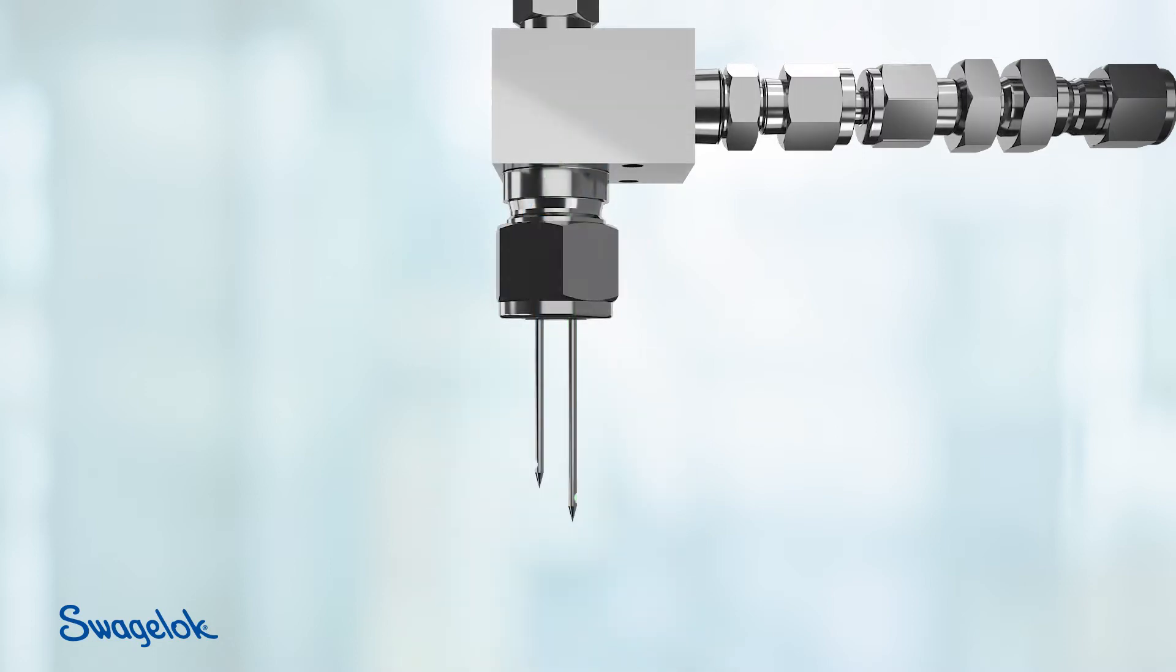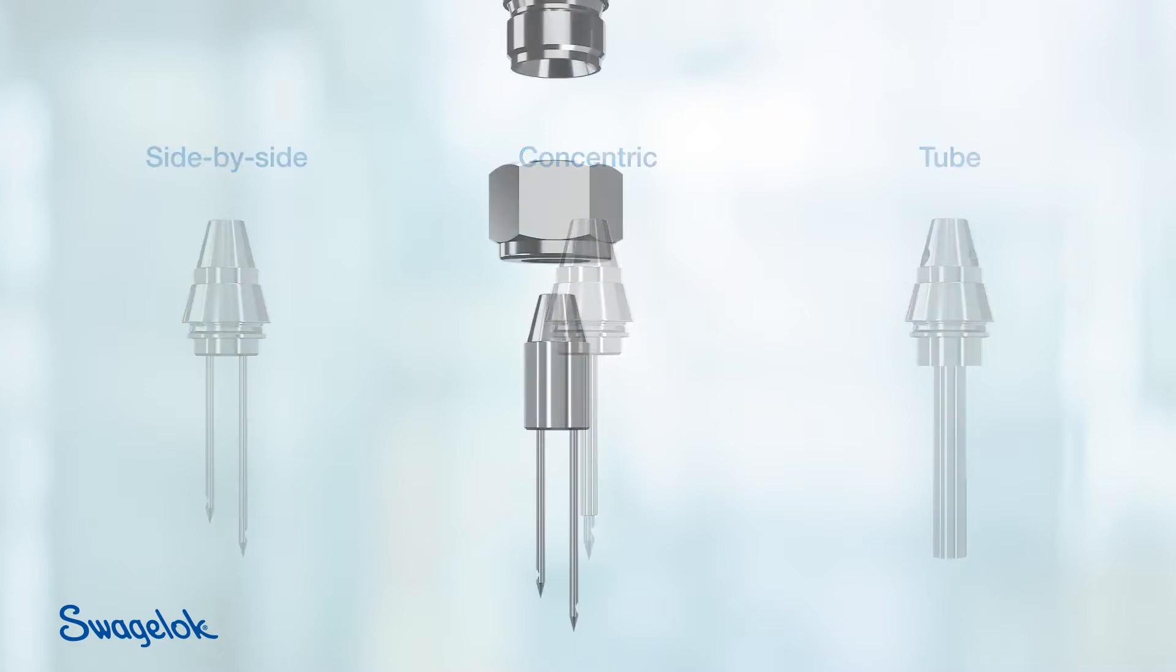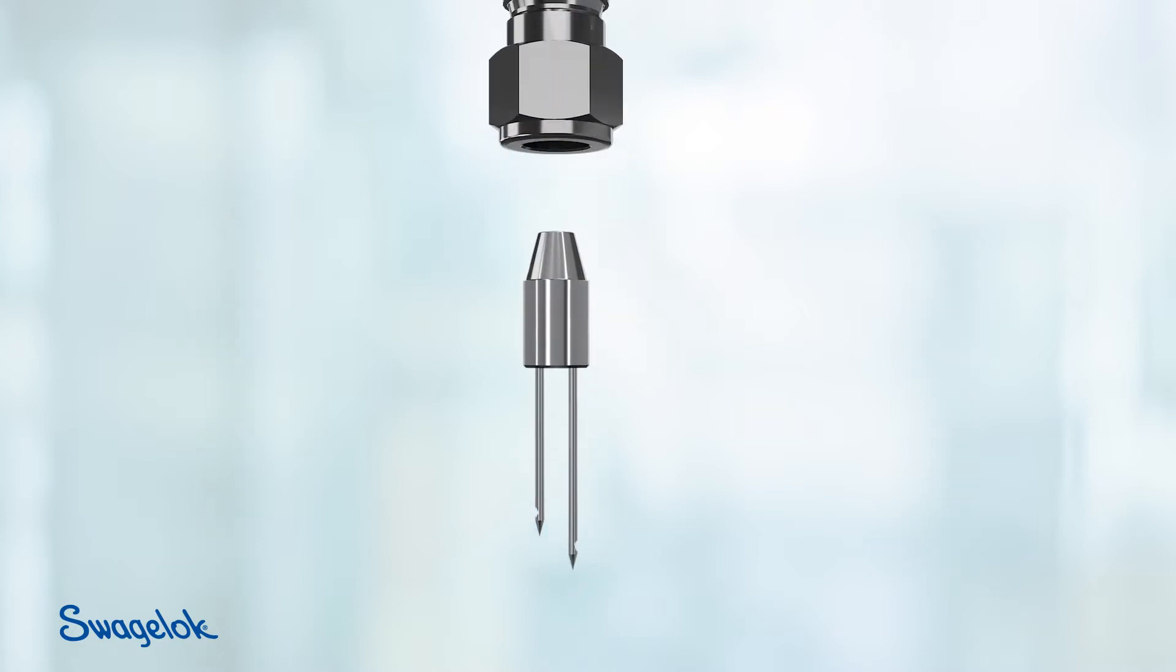In addition to the side-by-side needle assembly shown, alternate needle assembly designs are available, including concentric needles and a tube stub. Each can be quickly removed and installed by turning the tube fitting nut.